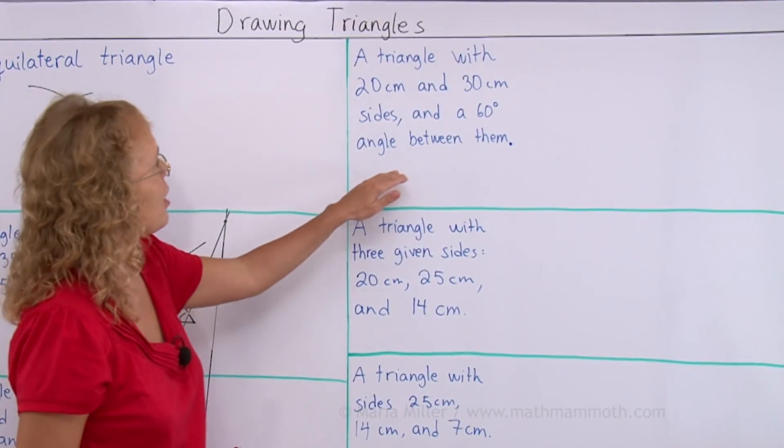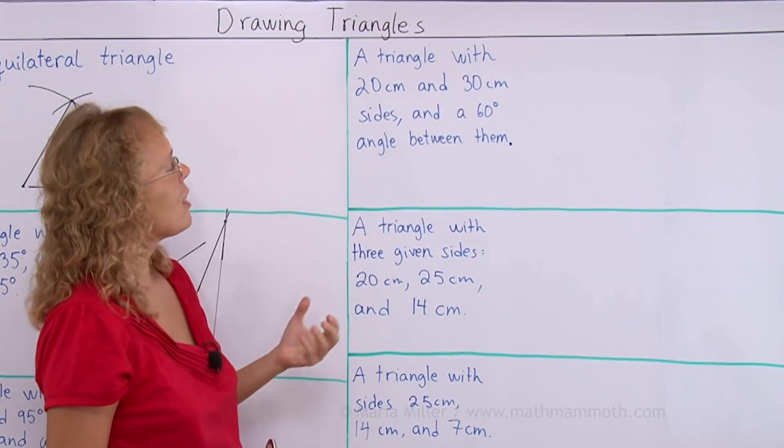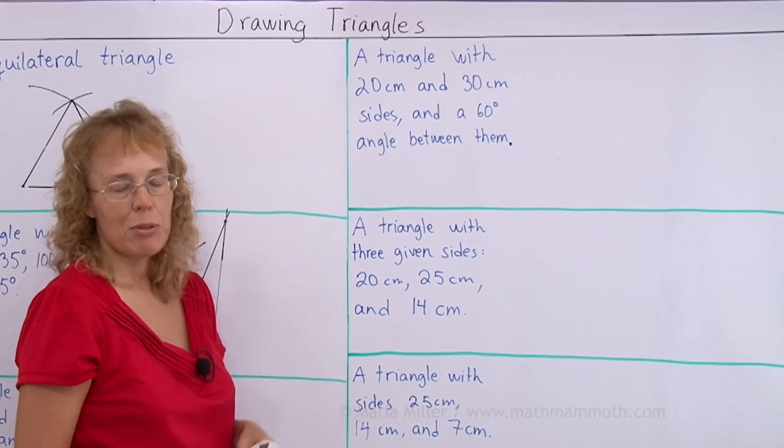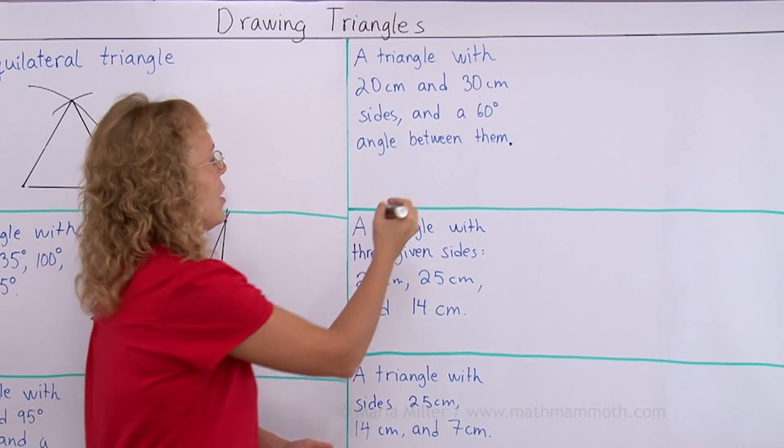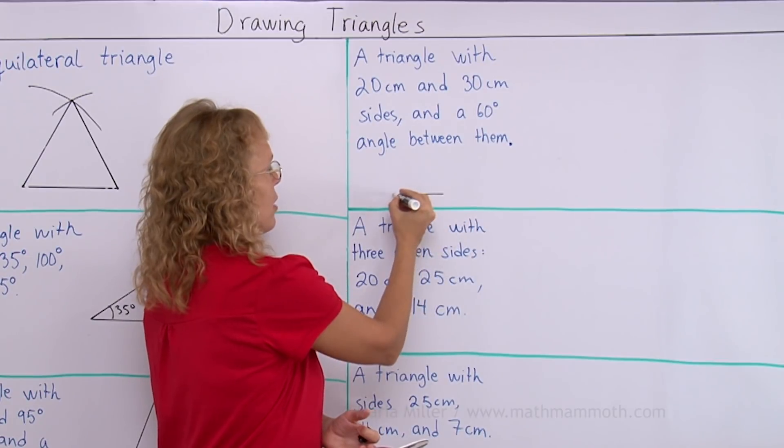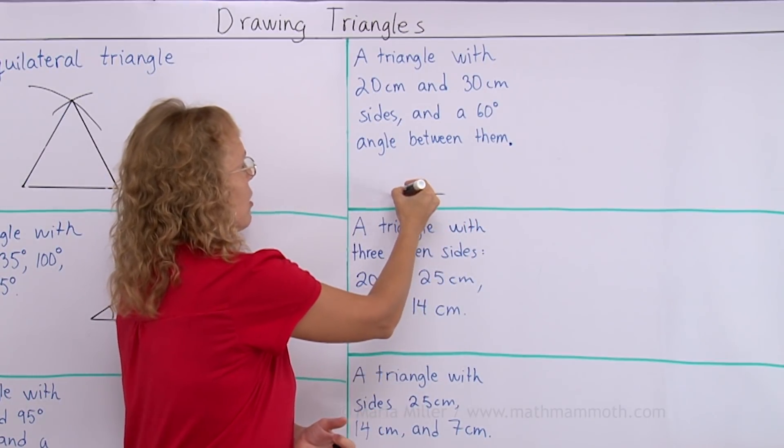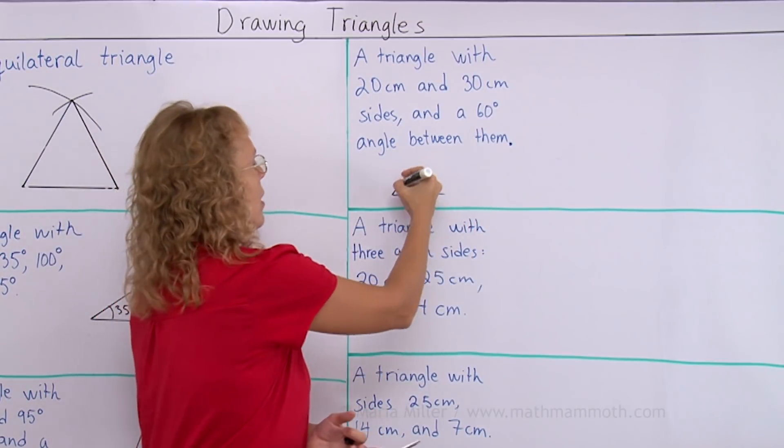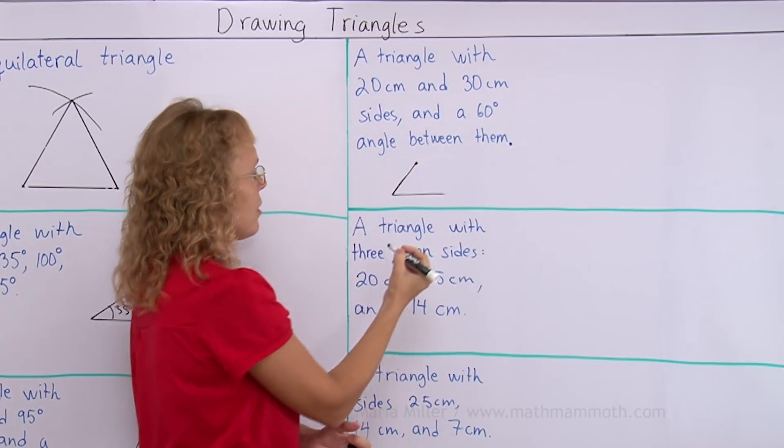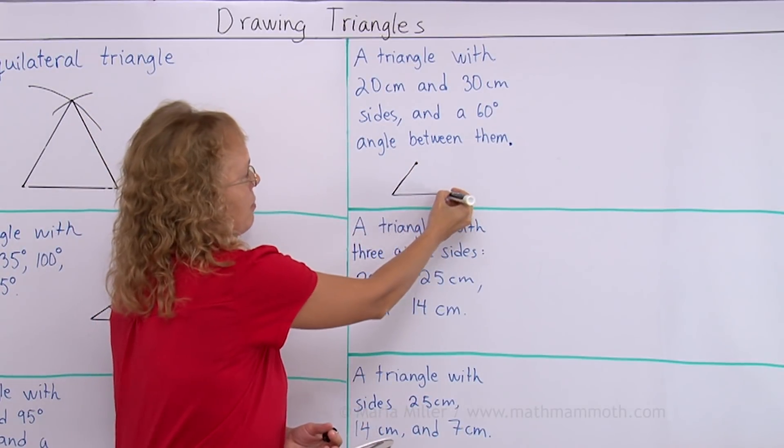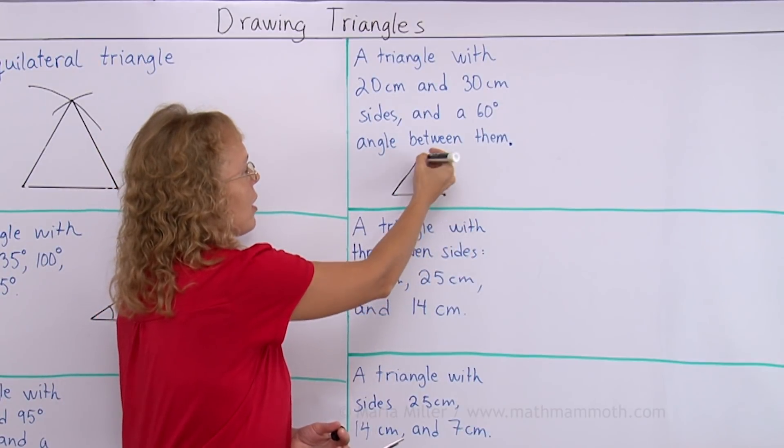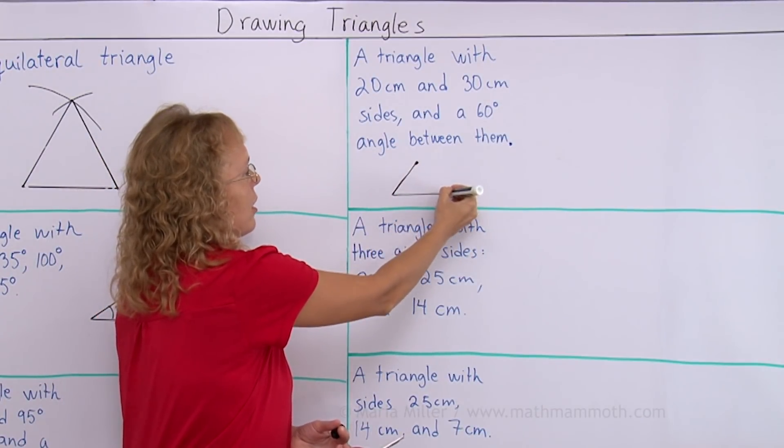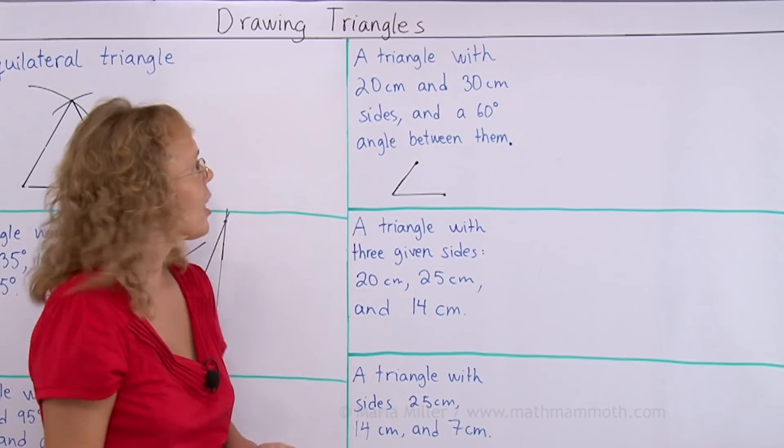A triangle with 20 centimeter and 30 centimeter sides and a 60 degree angle between them. This time I know two sides and an angle. So I could start out by drawing one of the sides, then measuring the 60 degree angle that way. And then measuring the side here. To me it looks like it will define the triangle because then I will have a vertex here, a vertex here and then I just draw in the third side.